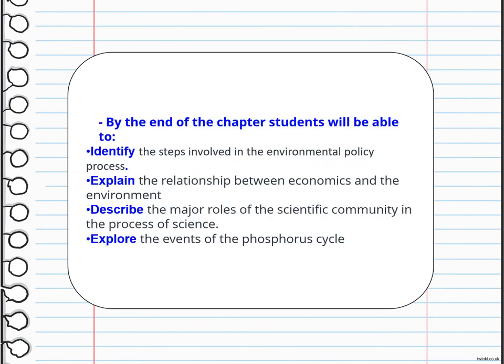By the end of the chapter, you will be able to: identify the steps involved in the environmental policy process, explain the relationship between economics and environment, describe the major roles of the scientific community in the process of science, and explore the events of the phosphorus cycle.